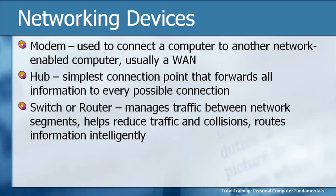Both switches and routers help reduce traffic, because they don't send out the message to everybody. A router, for example, will say, 'I know where that should go, and I'm only going to send that over one leg.' In other words, if it's only supposed to go to Miami, it's not going to send it to New York or Dallas. It also helps avoid collisions, because it's routing the network traffic where it needs to go, and it does so intelligently. That's different than the hub, which is very passive. I just wanted to introduce you to the terms switch and router, because you might hear them in casual conversation or if you have home internet.